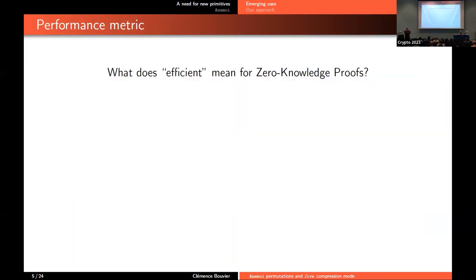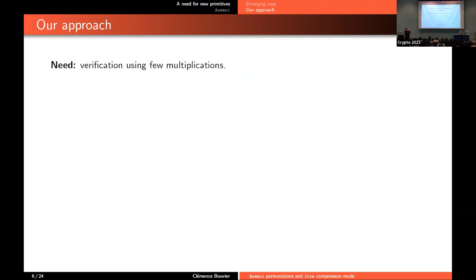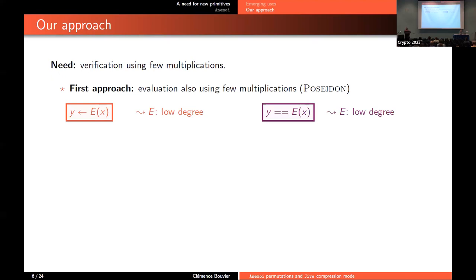What does it mean to have efficient verification for zero-knowledge proofs? It depends on the proof system. For R1CS, the idea is to minimize the number of multiplications. If we consider an equation and want to certify it is satisfied, we write all the steps and count only multiplications — no scalar multiplications, no additions. In the end we get only three equations, so three R1CS constraints. A first idea was to use functions with few multiplications during evaluation, as proposed in Poseidon. Another idea, by the designers of Rescue-Prime, is to use a function of low degree for verification and its inverse for evaluation, giving high-degree evaluation good for security.